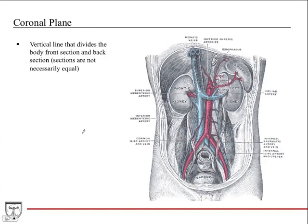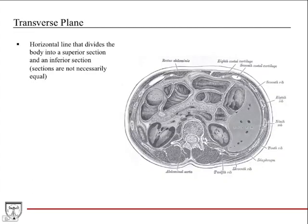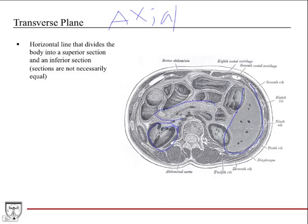The coronal plane is a vertical plane that divides the body into a front section and a back section — the sections are not necessarily equal. In this coronal plane of the abdomen, part of the front is cut off so we don't see the anterior abdominal wall, looking right in at the vessels and organs. The transverse plane, also referred to as the axial plane, is a horizontal plane dividing the body into a superior and inferior section. In this axial view of the abdomen you can see the liver on the right, a kidney, and the pancreas, showing the horizontal relationships of structures.